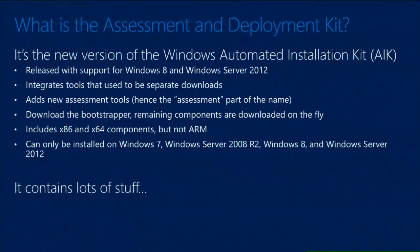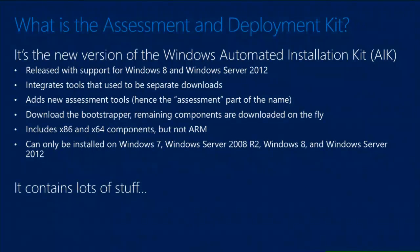There are x86 and x64 components included in the Assessment and Deployment Kit. There aren't any ARM components though. So if you think you can use the ADK to create custom images or to maintain Windows on ARM or Windows RT, you can't — those tools aren't available as part of the ADK. That's okay; Windows RT is really intended to come preconfigured on the devices anyway, so it shouldn't be an issue.